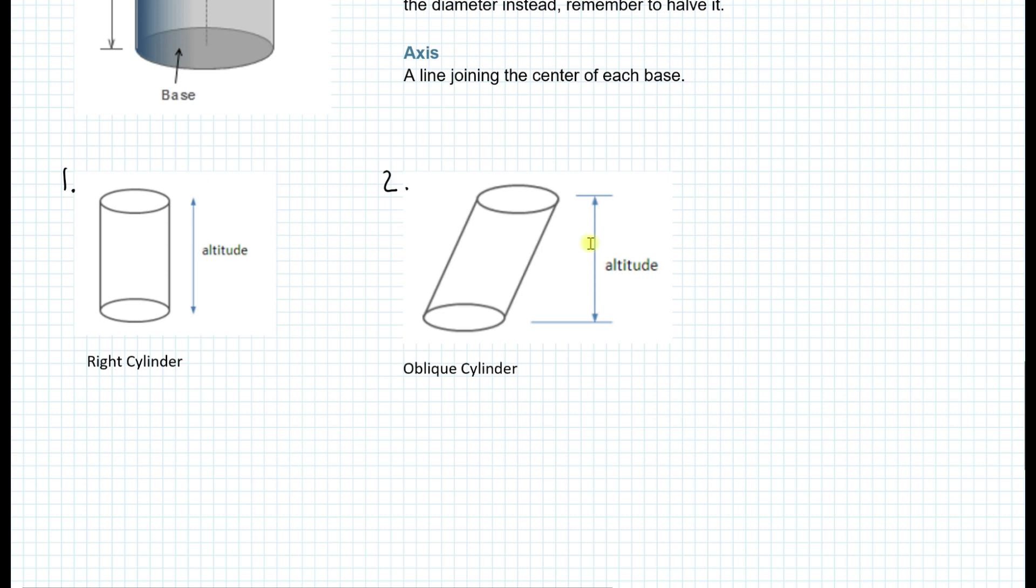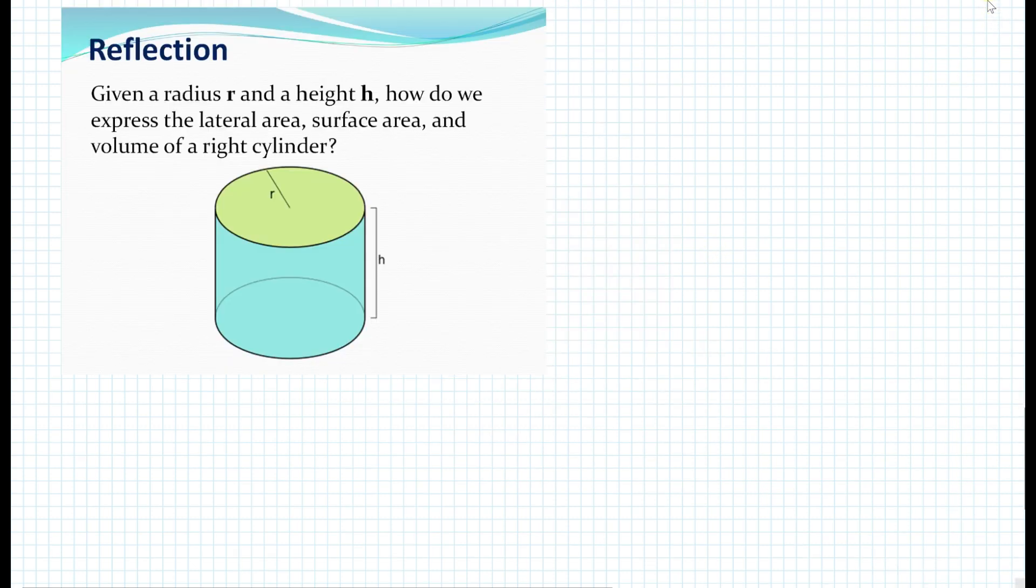If one of the bases is displaced sideways, as shown in figure 2, that is called an oblique cylinder. Now that we have discussed some of the properties of cylinders and defined it as well, let's reflect on the following. Given the radius R and the height H, how do we express the lateral area, surface area, and volume of a right cylinder? So if you look at the lateral area, that is just the lateral area that is shaded over here. So what would happen if we cut that lateral surface exactly over here, and then fold it on a flat surface, fold it outwards, and make it flat?